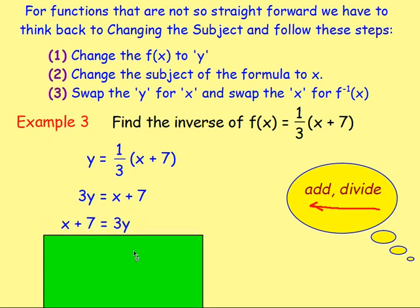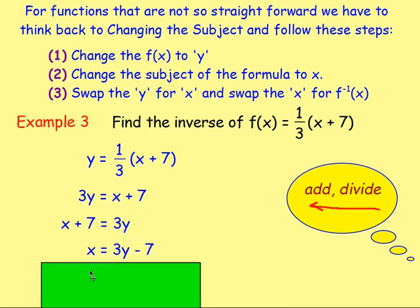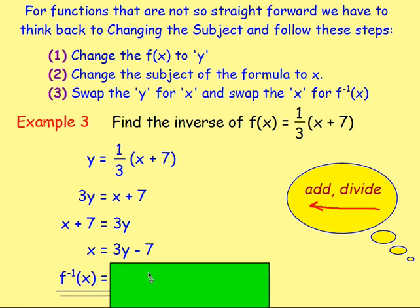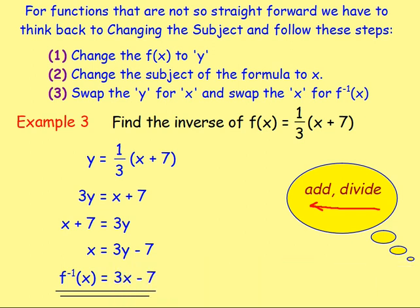From there, get rid of the add 7 — subtract 7 from both sides. Once you're at that stage, swap the y for x and swap the x for f to the negative one of x. That would give you 3x minus 7 as the inverse.